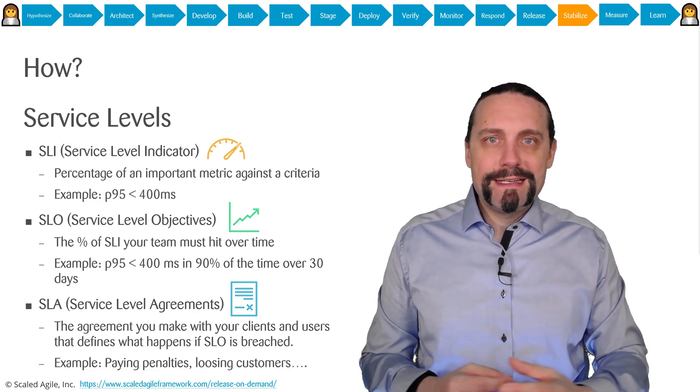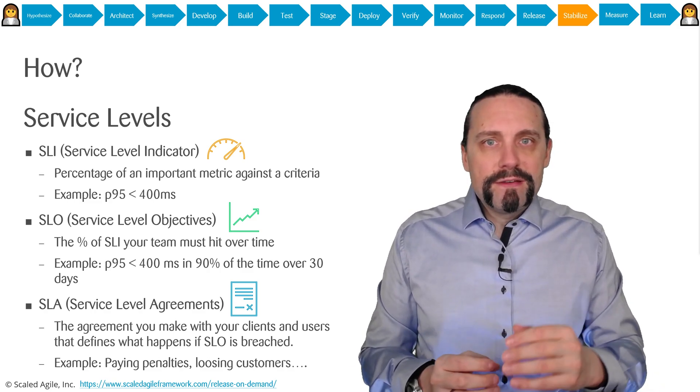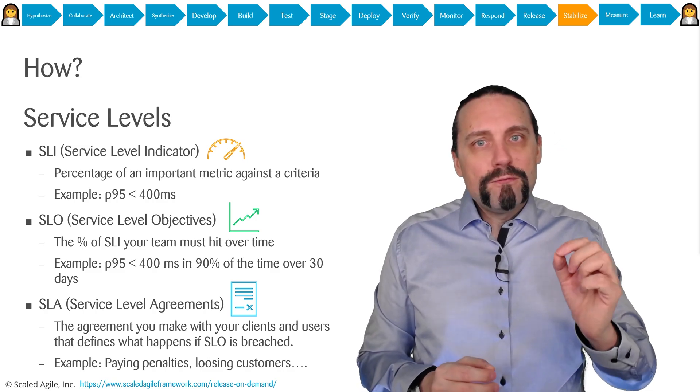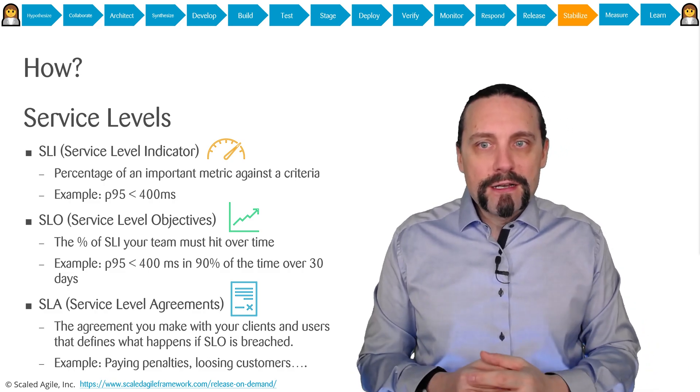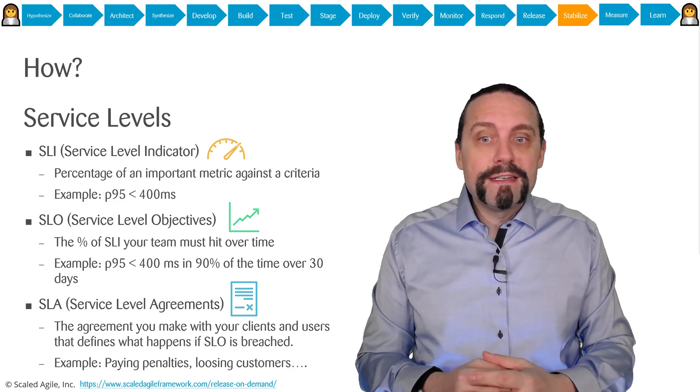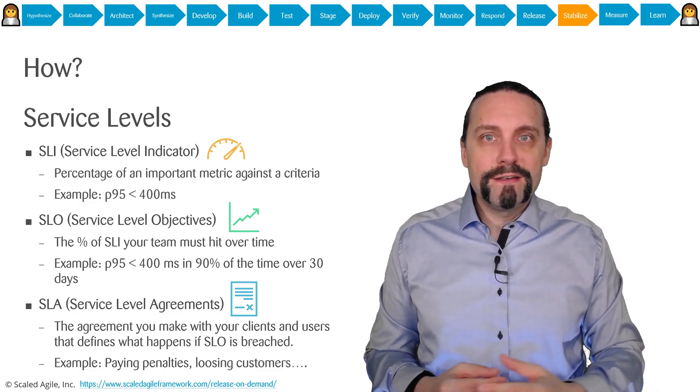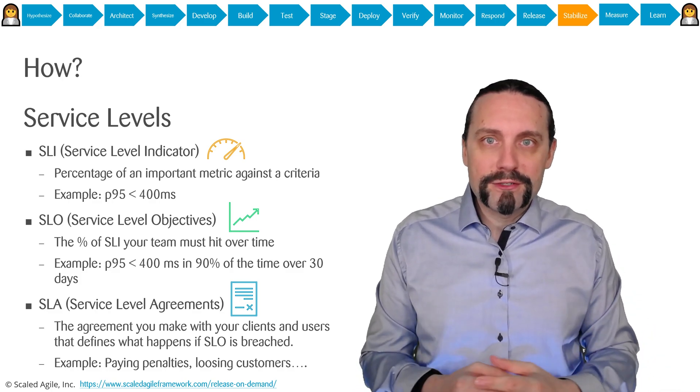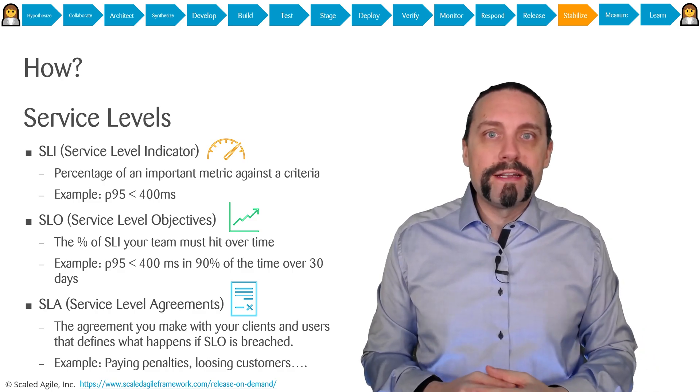Which brings us to the SLA or service level agreement. This is the agreement we're doing with our clients and users that defines what happens when an SLO, service level objective, is breached. An example for that is when the SLO is breached, we need to pay penalties or we lose customers. You can see understanding what the service level agreement, the service level objectives, the service level indicators, and the non-functional requirements are is absolutely crucial so we can operate our system.